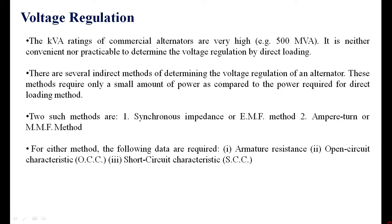In this session, we will see how to determine the voltage regulation of an alternator by indirect method. We know that kVA rating of commercial alternators are very high, that is in terms of mega volt ampere. Then it is not possible to test these alternators in the laboratory because they will take a large power. Therefore, there are several indirect methods adopted to determine the voltage regulation of the alternator.